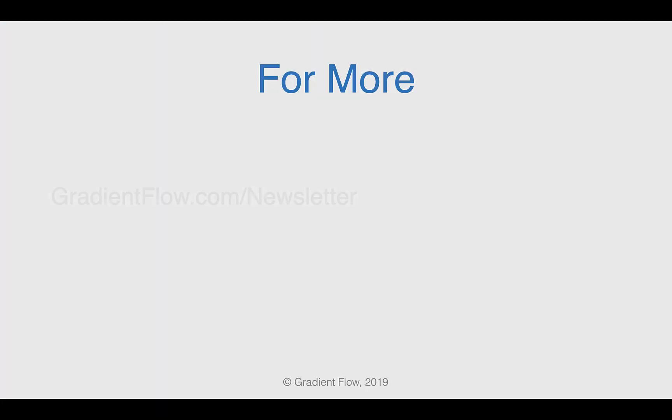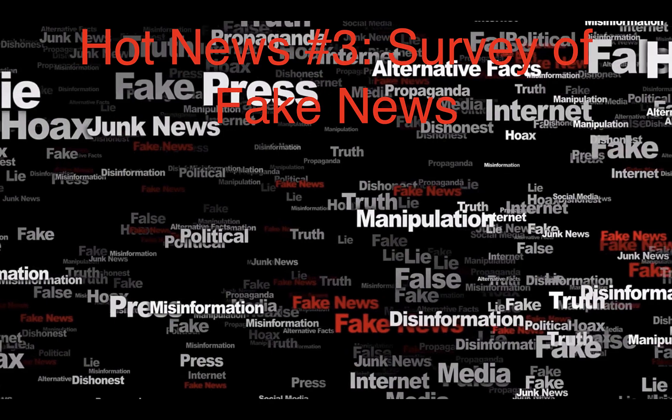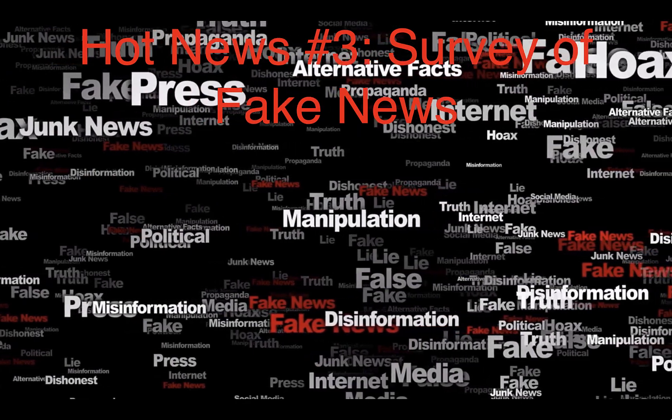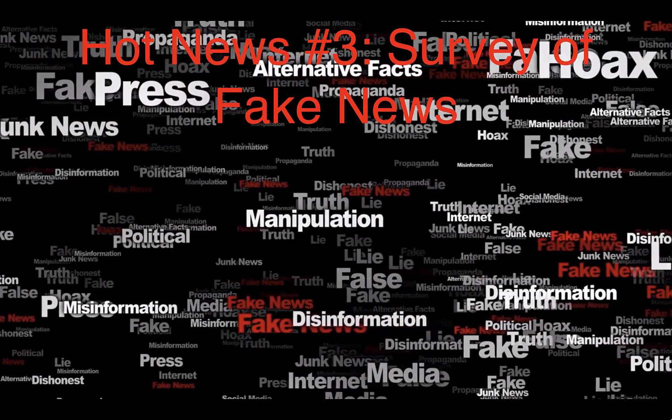Streamlit is used for open source apps and for internal data tools in enterprise organizations. See Gradient Flow Newsletter number 21 for more. Given the explosive growth of fake news, there's a growing need for fake news detection and intervention.